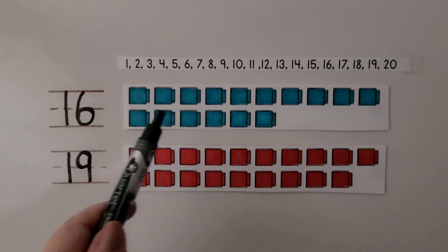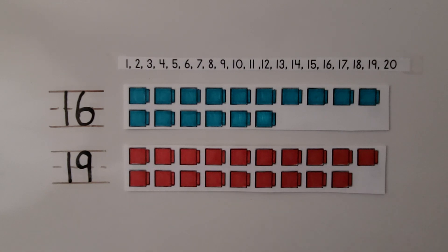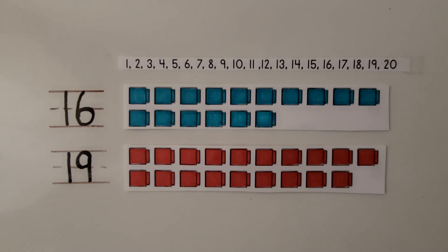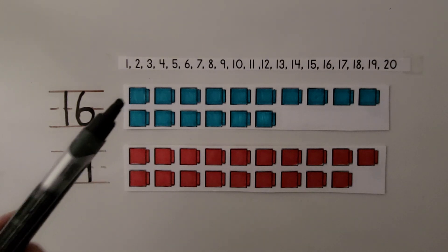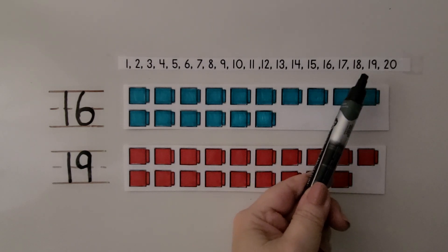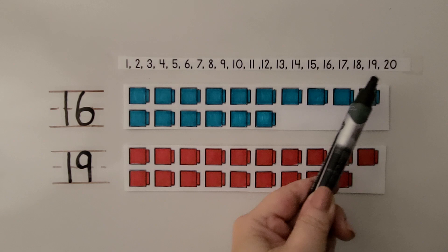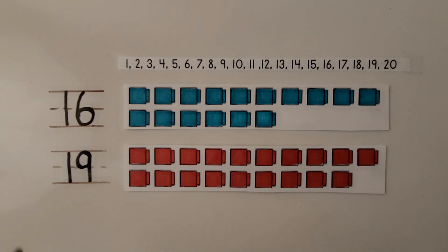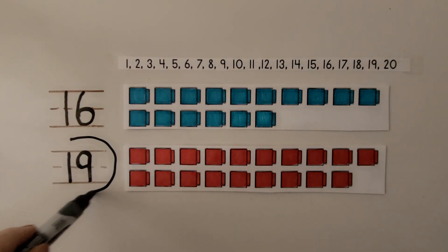Here are 16 blue cubes and 19 red cubes. We need to circle the greater number. Remember, the greater number comes after in counting order and has more cubes. Do you think there are more cubes for 16 or 19? The greater number comes after — here's 19 and here's 16. 19 comes after, so 19 is the greater number. You're right!